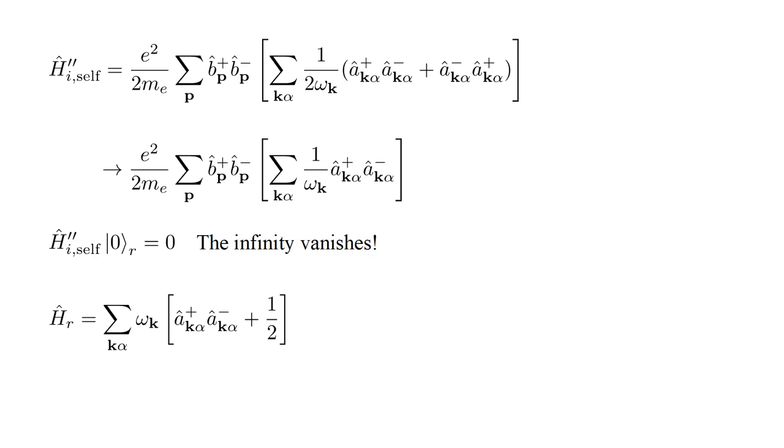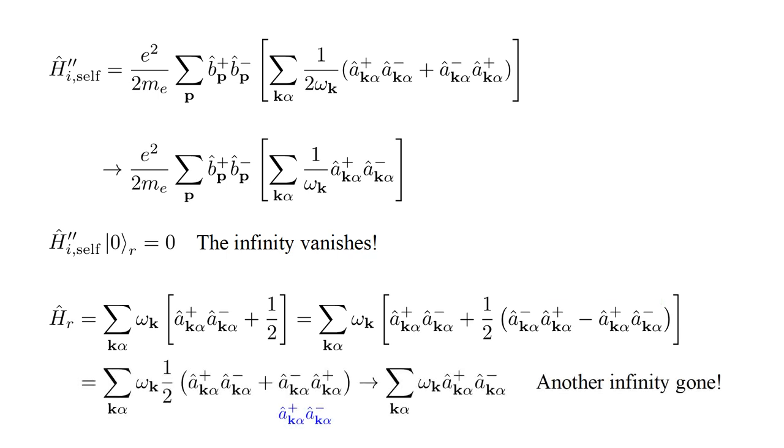We can apply the same trick to the problematic one-half term in the radiation Hamiltonian. We multiply it by the a-hat minus a-hat plus commutator, which has a value of one. The first and third terms combine to give one-half times the first term. Applying our trick to the second term, we end up with the sum over all k-alpha of omega-k a-hat plus k-alpha a-hat minus k-alpha. Just as in the previous case, this will vanish when applied to the photon vacuum state.